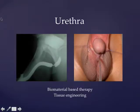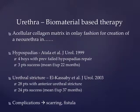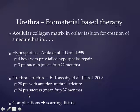The urethra has quite a bit of research — probably the second most studied area after bladder augmentation. Applications include stricture disease and hypospadias, using either biomaterial-based acellular approaches or cellular scaffold-based lab-grown techniques. For biomaterial-based therapy, an acellular collagen matrix in an onlay fashion is used for creation of a neourethra. Atala's group studied four boys with failed hypospadias repair and had three successes at a mean of 22 months; one developed a fistula and required reoperation. For urethral stricture, El-Kassaby from Atala's group studied 28 patients with anterior urethral strictures in an onlay fashion — 24 had successful patent urethras, with scarring and fistula formation as complications.